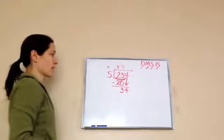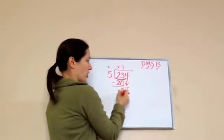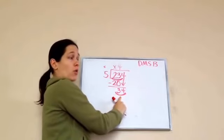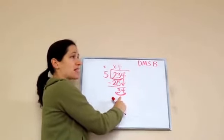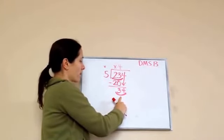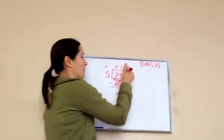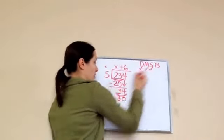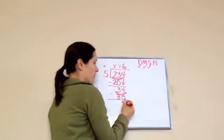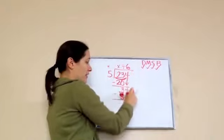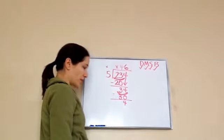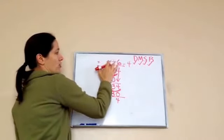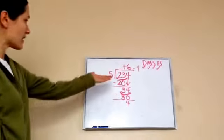Now we're working with 34. Start over — divide: 5 times what will equal 34? 5 times 6 is 30, and 5 times 7 is 35. So 5 times 6. Multiply: 5 times 6 is 30. Subtract: 34 take away 30 — we get 4 left over. Bring down — is there anything else to bring down? No. So we have a remainder of 4. When I'm done, I just erase the X so I can see the answer is 46 remainder 4.